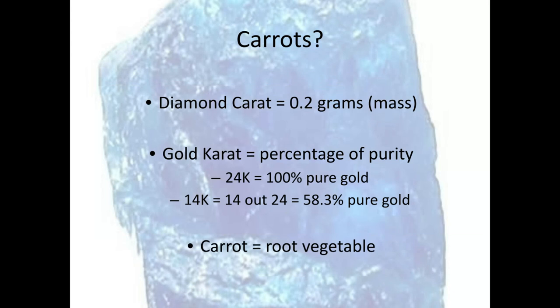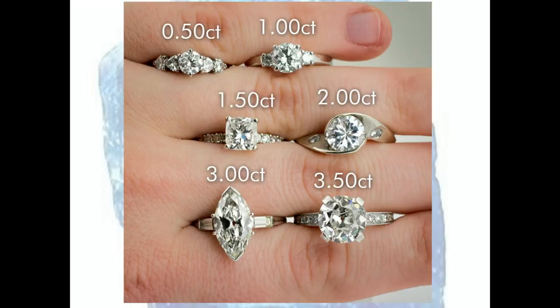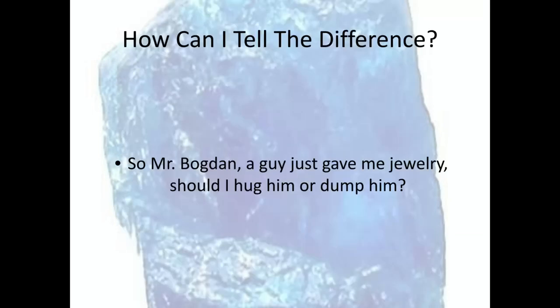If you have a 14 karat gold ring, it is actually only about 58.3% gold and the rest is other metals. And of course, carrot spelled C-A-R-R-O-T is just something you eat — it's a root vegetable. Here we have different sizes or masses of diamonds on screen, and when we talk about carats of diamonds, all we're talking about is how much they would measure on a triple beam balance.